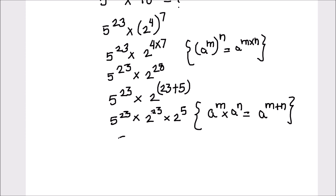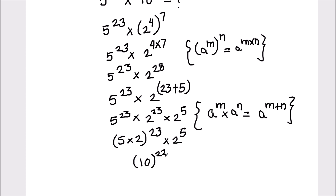So this is 5 raised to power 23 times 2 raised to power 23, times 2 raised to power 5. We can write 5 raised to power 23 times 2 raised to power 23 as 5 times 2, whole raised to power 23, which equals 10 raised to power 23. And 2 raised to power 5 is 32.